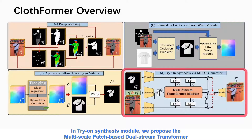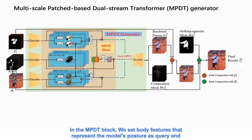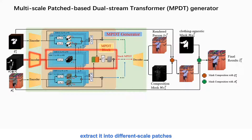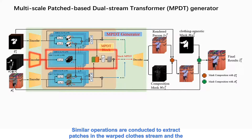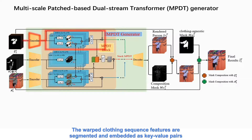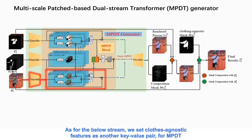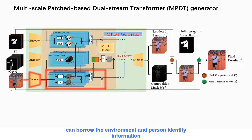In the try-on synthesis module, we propose the multi-scale patch-based dual-stream transformer generator. Let's look at the detailed structure. In the MPDT block, we set body features that represent the model's posture as query and extract it into different-scale patches. Similar operations are conducted to extract patches in the warped clothes stream and the clothes-agnostic stream. The warped clothing sequence features are segmented and embedded as key-value pairs, so that MPDT can search and extract the texture and color features from clothes. We set clothes-agnostic features as another key-value pair, so MPDT can borrow the environment and person identity information.